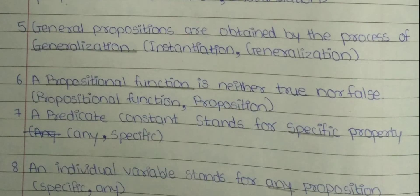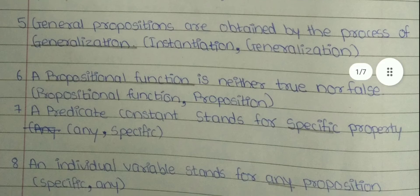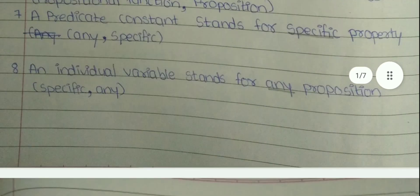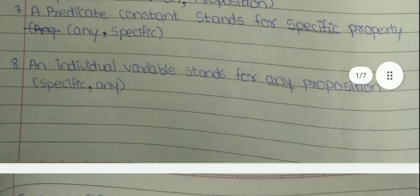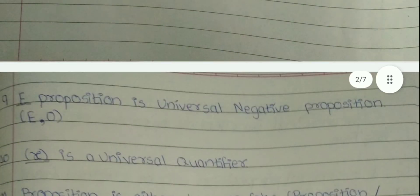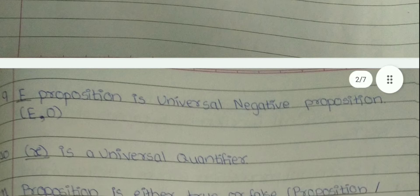6. A dash is neither true nor false. The answer is propositional function. 7. A predicate constant stands for dash property. The answer is specific. 8. An individual variable stands for dash proposition. The answer is any. 9. Dash proposition is universal negative proposition. The answer is E.